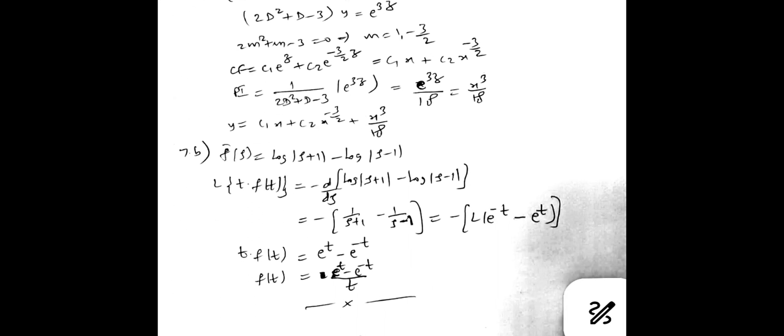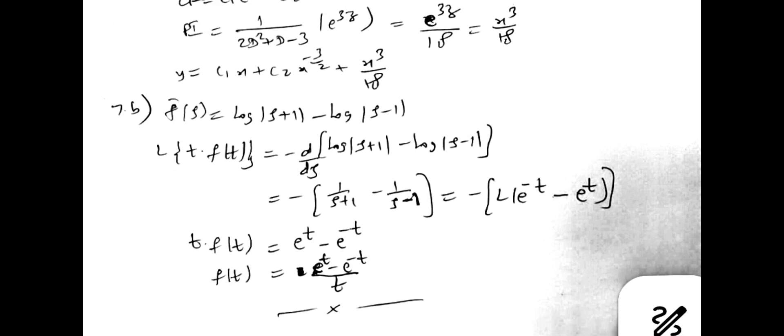Seventh my B bit is inverse Laplace transform. So both sides you have to log a by b form. Log a minus log b. Then take multiplication property. Then apply the inverse Laplace transform. Differentiate it. Then inverse Laplace transform t into f of t. T will go that side. F of t is equal to e power t minus e power t by t.